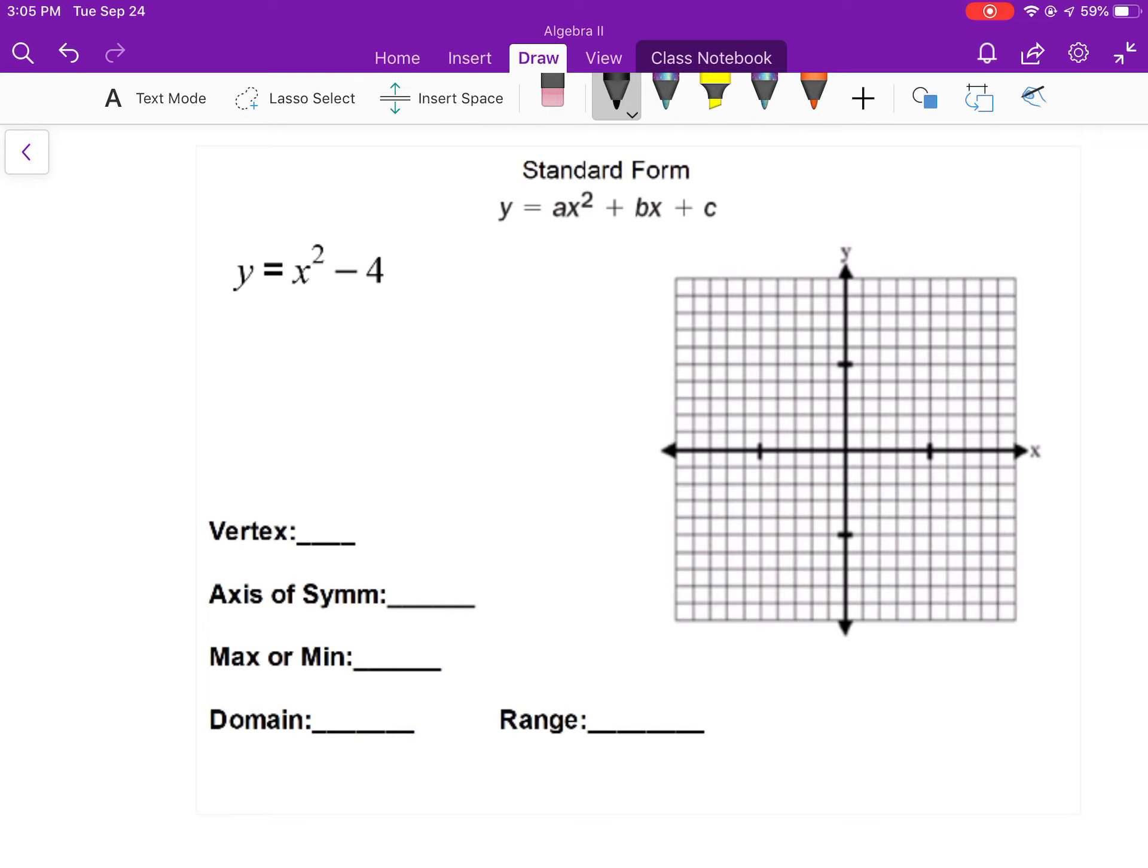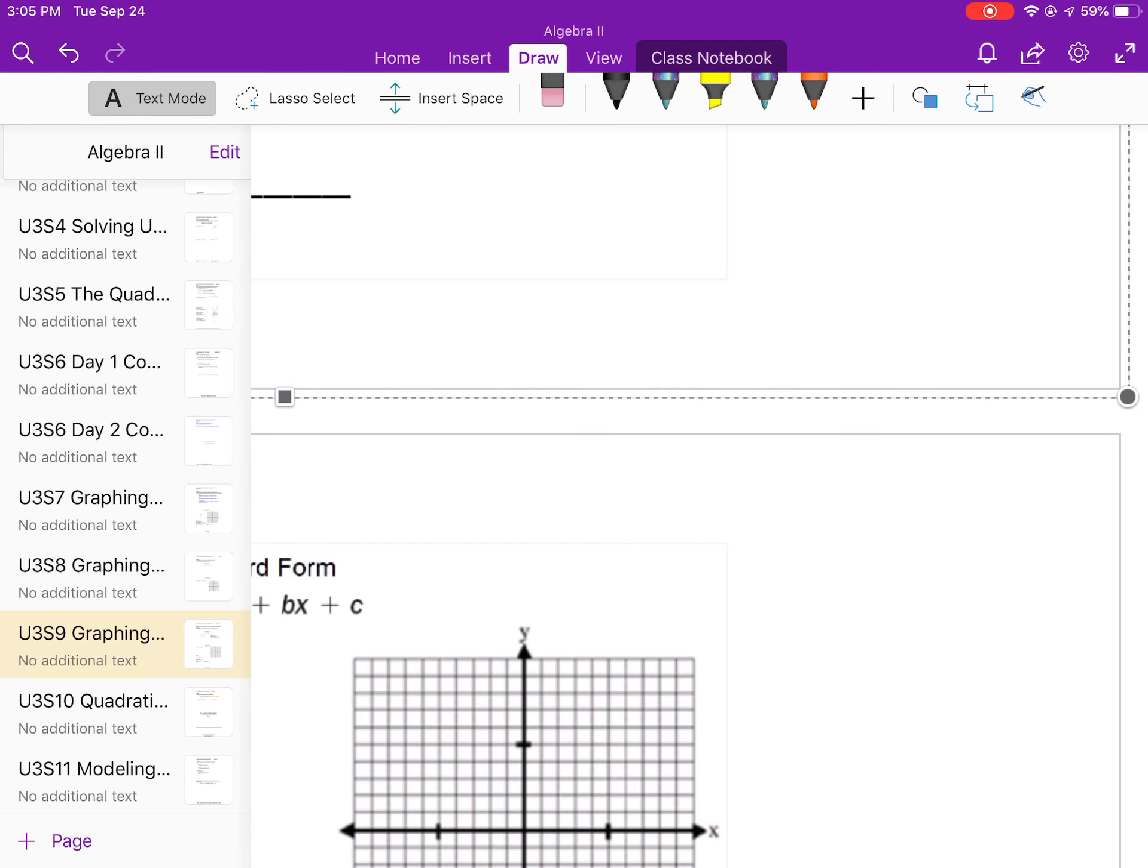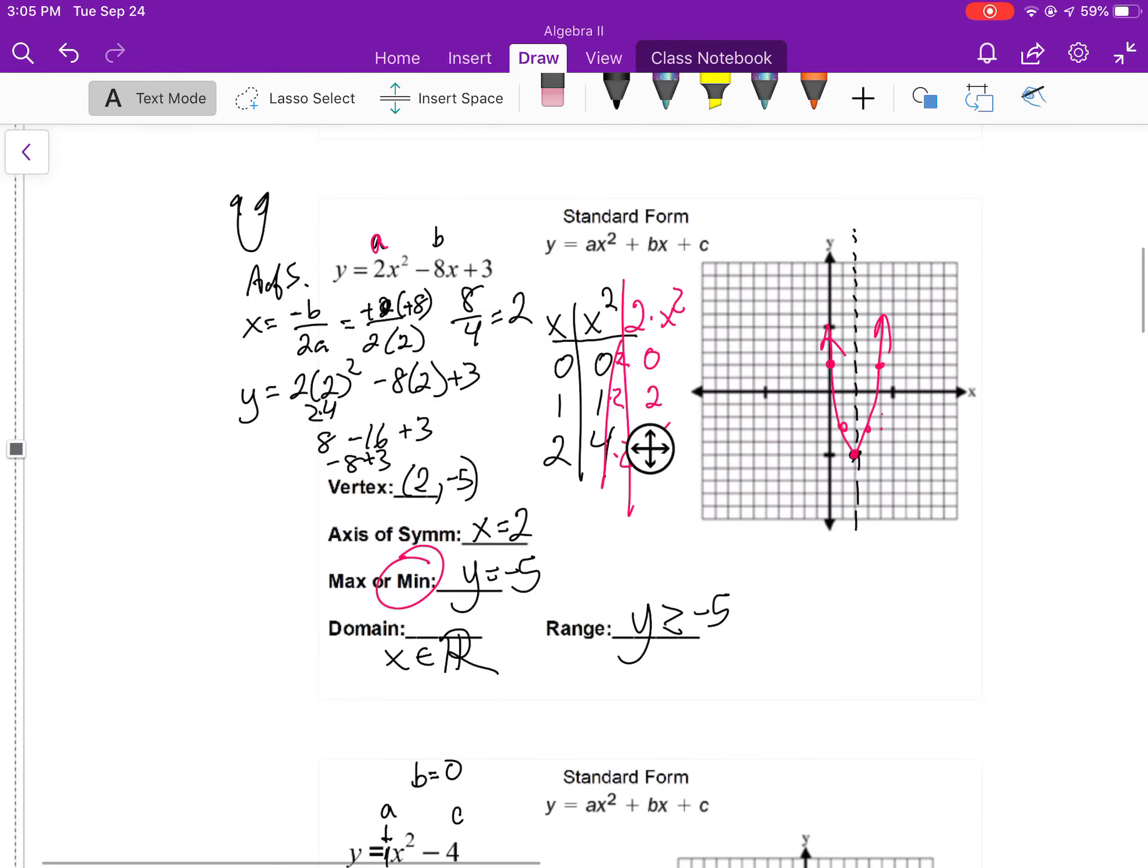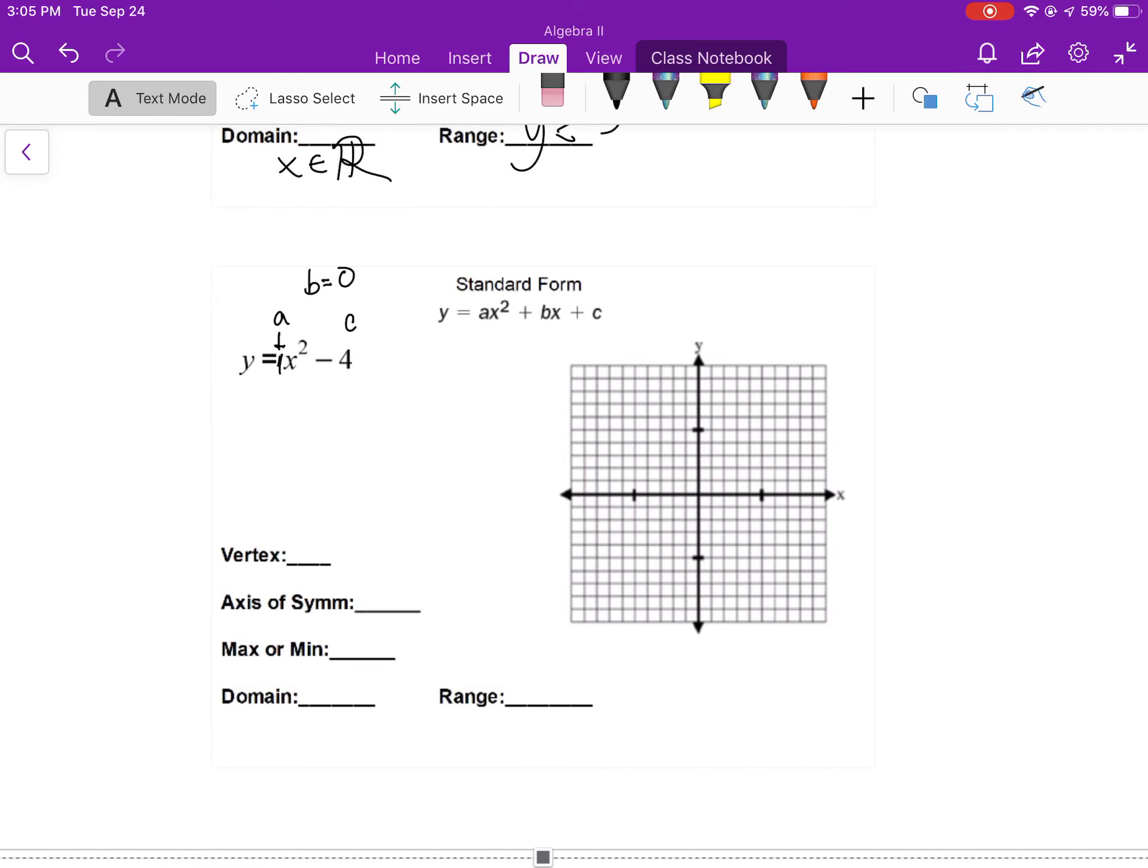Here, there is no x term, but that's okay, because if there is one, this a value is going to be the 1 in front of there. This is your c value. B is just simply going to be 0. So in my axis of symmetry, x equals, negative 0 over 2 times 1. Well, that's just going to work out to be 0. So my y-axis is my axis of symmetry.